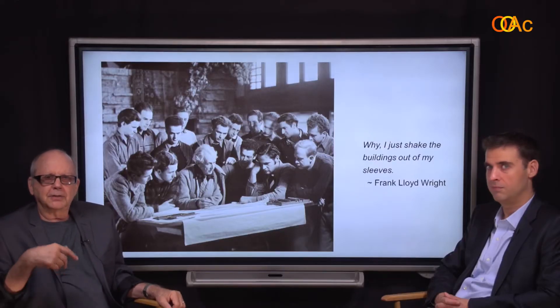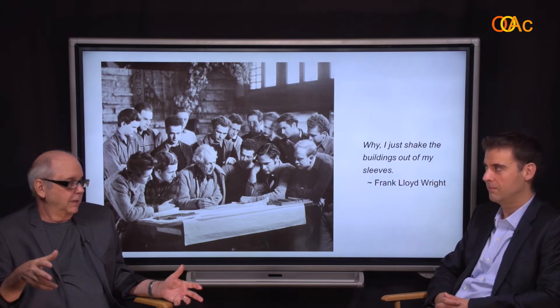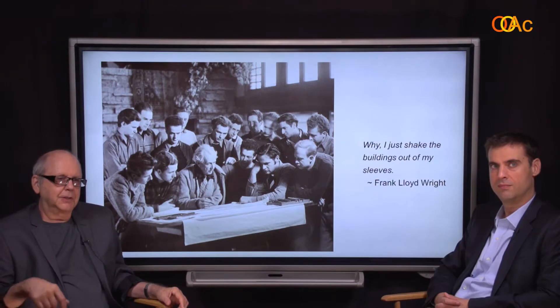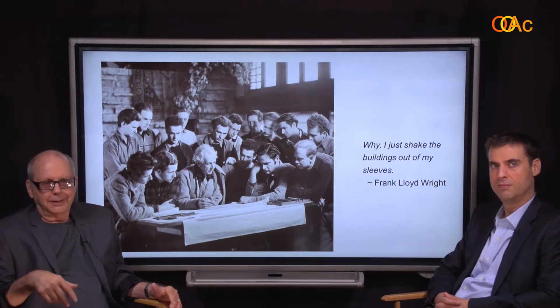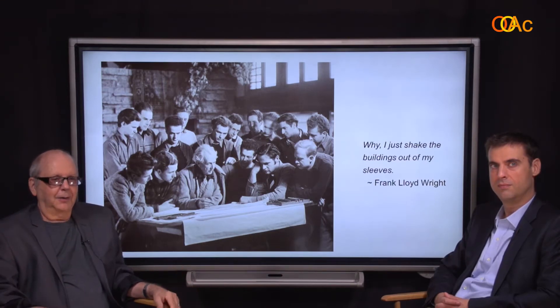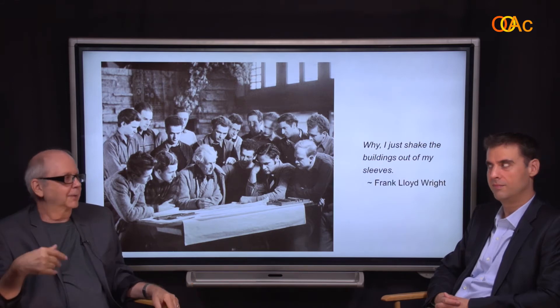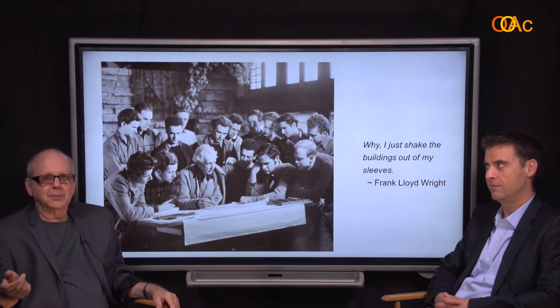The story goes that Kaufman had some work in Wright's part of the world in Wisconsin and contacted Wright saying he was coming and could stop by Taliesin to see how the project was doing. Wright said terrific. Then Kaufman called saying he was in Chicago and would be there in a couple of days. Wright said they were waiting. He called again from Racine saying he had some meetings. Wright said they were waiting. He called in the morning saying he was leaving Racine and would be there in a few hours.